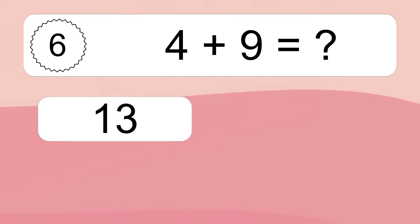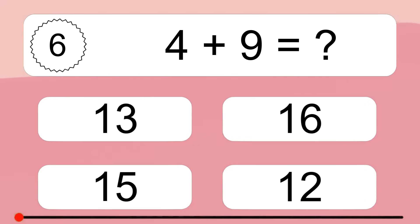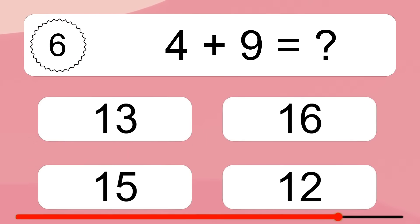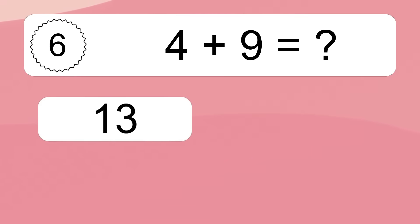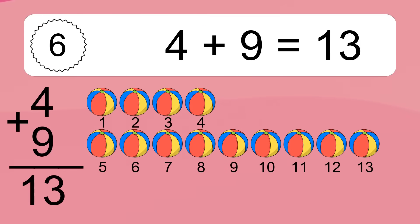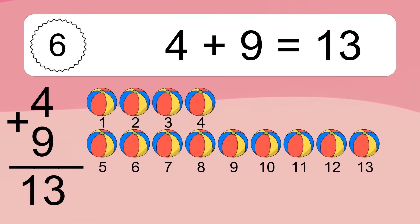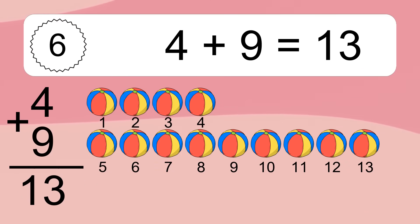4 plus 9 equals what? 4 plus 9 equals 13. Let's count it: 1, 2, 3, 4, 5, 6, 7, 8, 9, 10, 11, 12, 13.